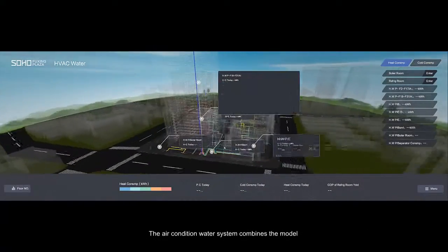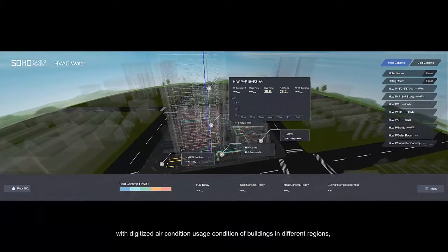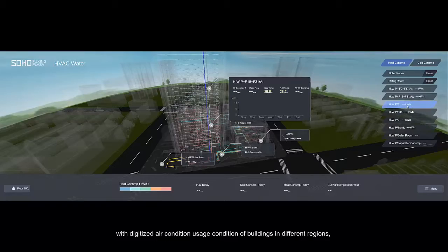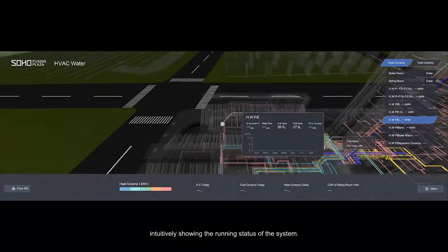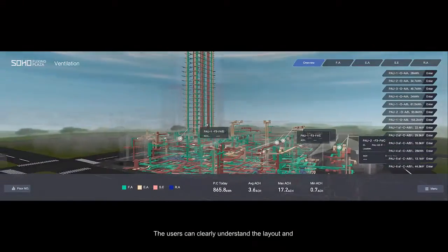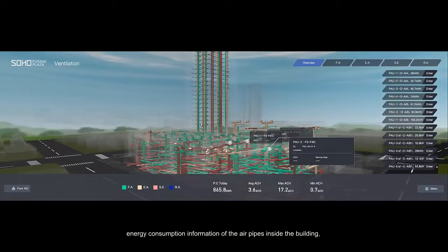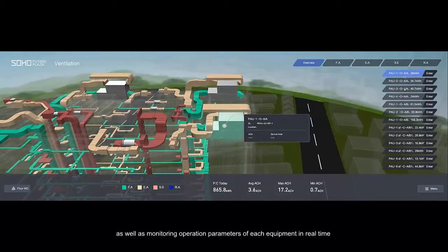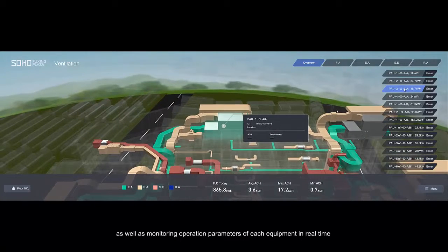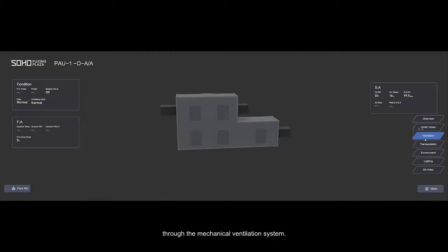The air-conditioned water system combines the model with digitized air-conditioned usage conditions of buildings in different regions, intuitively showing the running status of the system. Users can clearly understand the layout and energy consumption information of the air pipes inside the building, as well as monitoring operation parameters of each equipment in real time through the mechanical ventilation system.